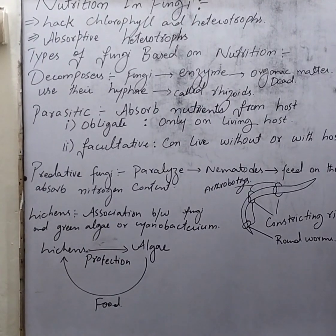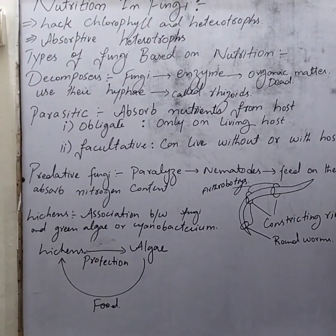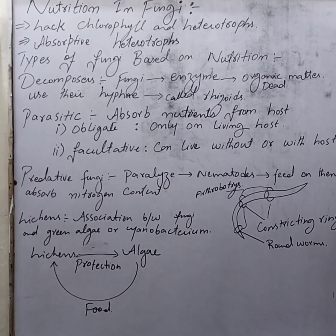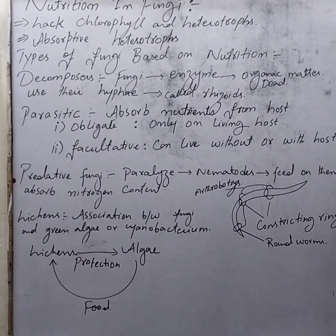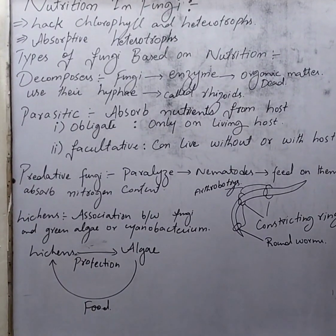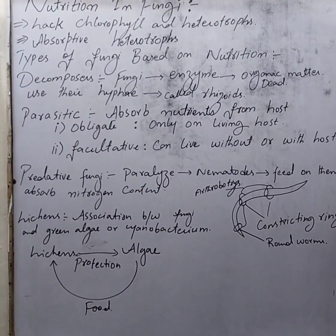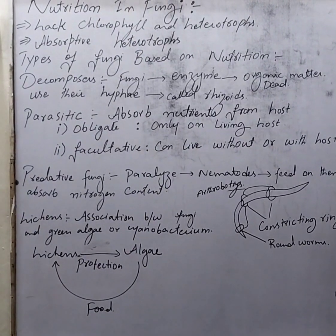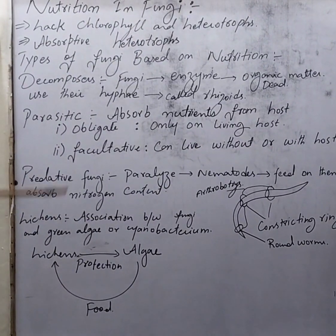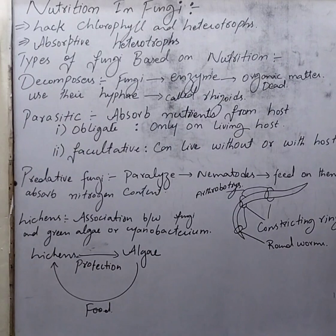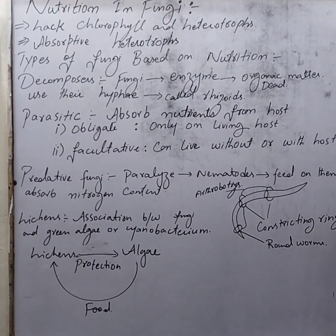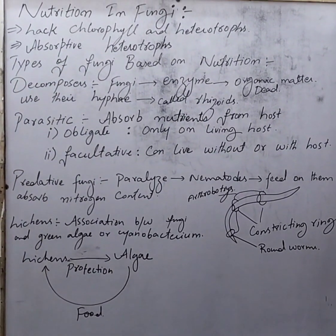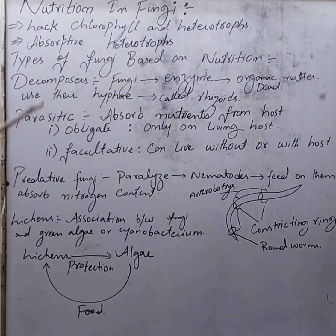Fungi have an absorptive nature — they do not have a proper mouth to ingest food like animals. Instead, they absorb food directly. This is called absorptive heterotrophic nutrition. They have different types of nutrient acquisition strategies.